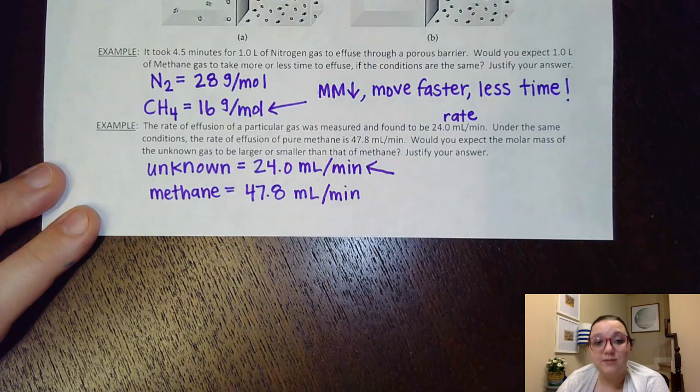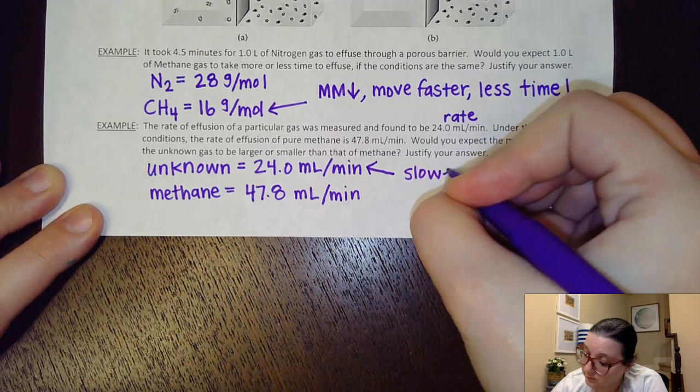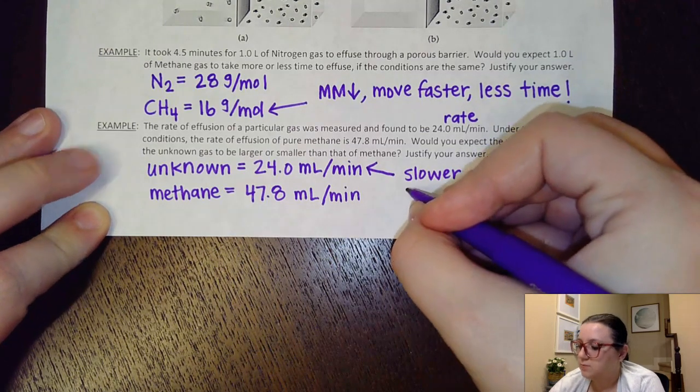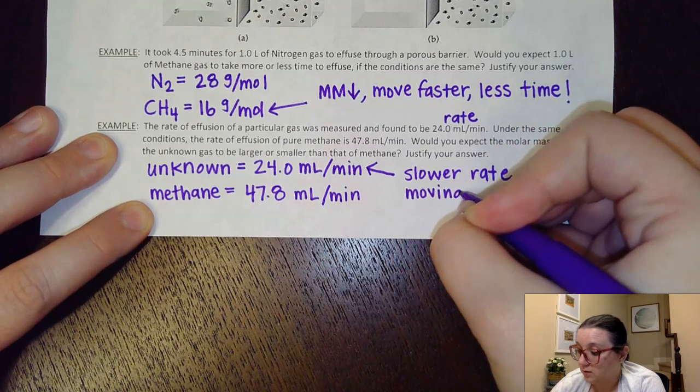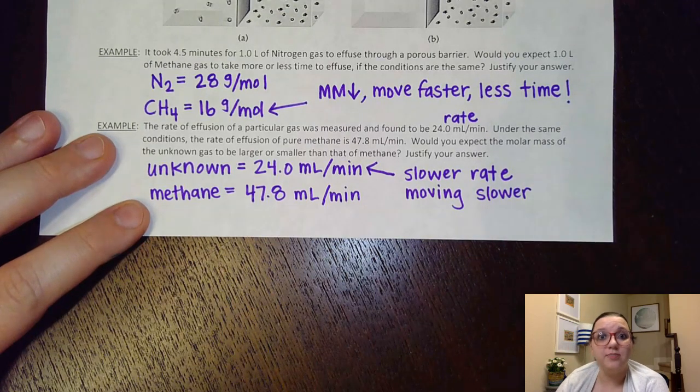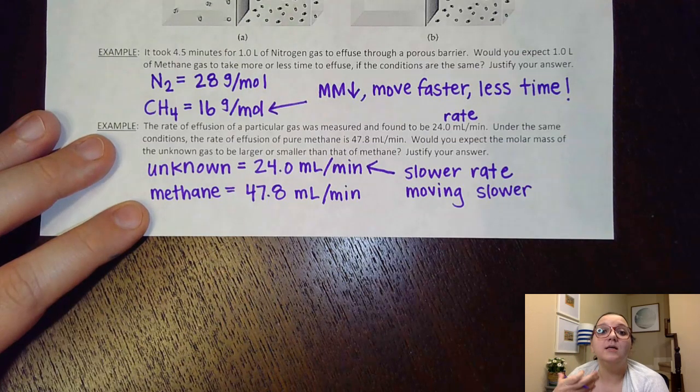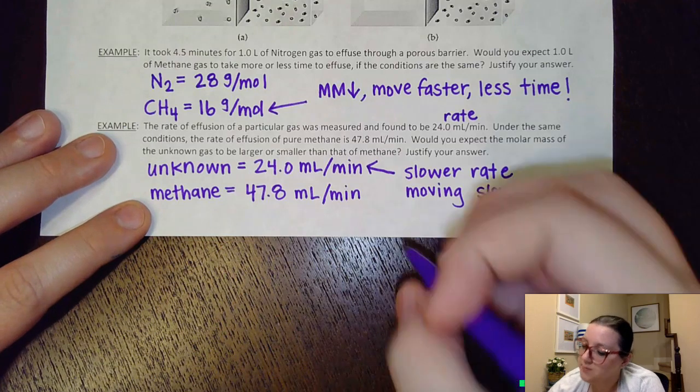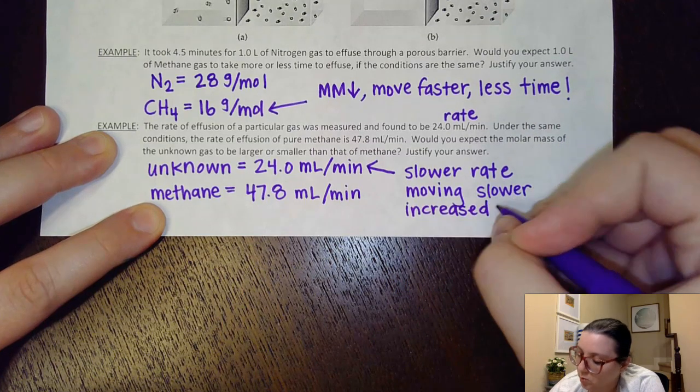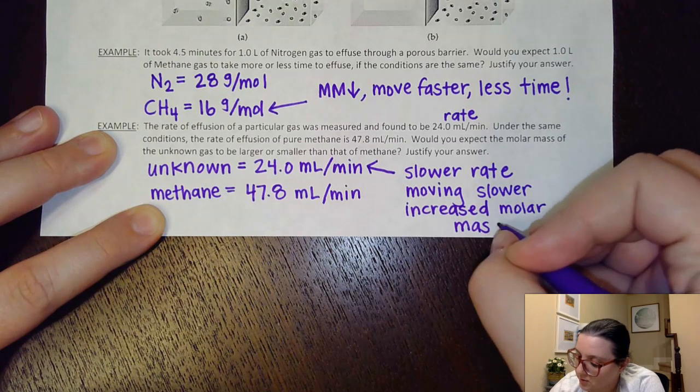The rate value is slower than that of methane. So if I have a slower rate, then that means my molecule is moving slower. So think about when you would move slower at the same kinetic energy, you would move slower if your molecule is heavier. And so what that means is that it must have an increased molar mass in comparison to the methane.